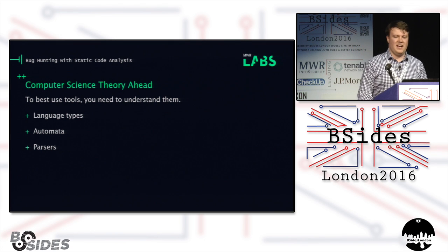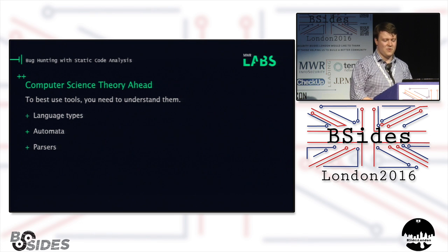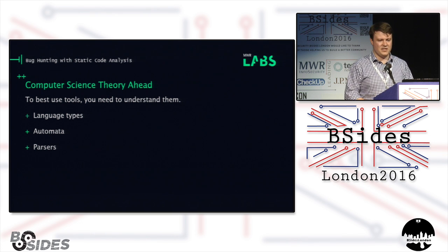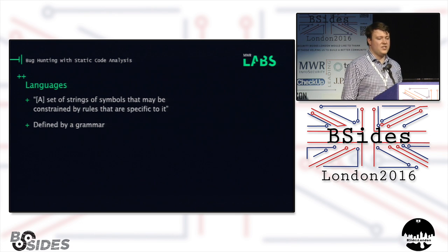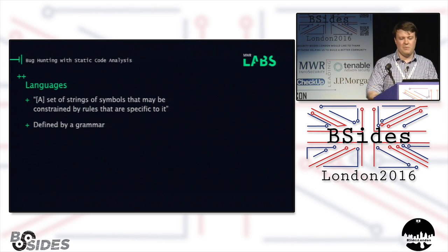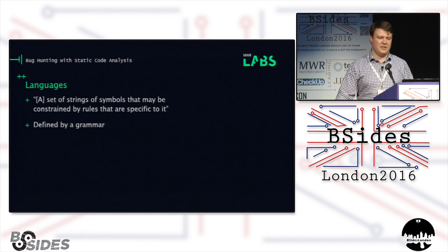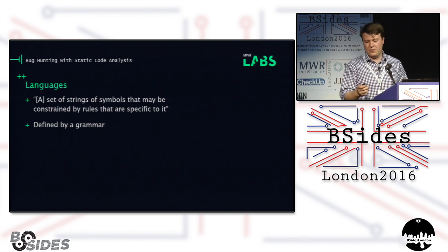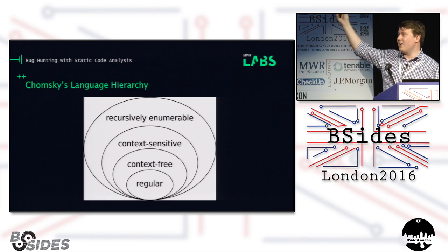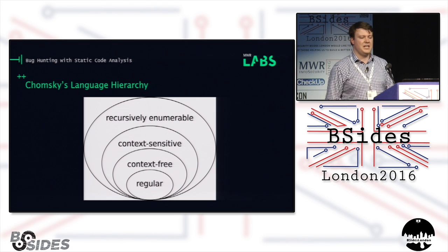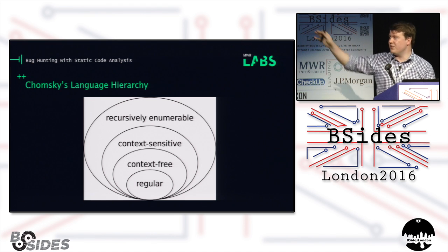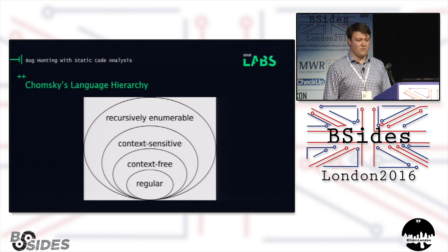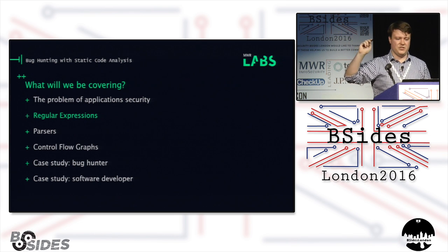A quick warning: in order to understand how a lot of these tools work, there's going to be some computer science theory. Apologies to those who've already done compiler courses, and equally apologies for trying to fit two semesters of compiler theory into about 15 minutes. We're going to cover language types, automata, and how you build parsers from automata. A language is a set of strings of symbols constrained by a set of rules, usually defined by a grammar. Noam Chomsky came up with a hierarchy of different kinds of constraints applying to different types of languages. We're mainly focusing on the bottom two — regular and context-free — where most programming languages fall.